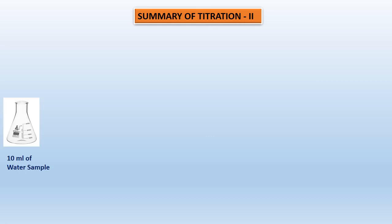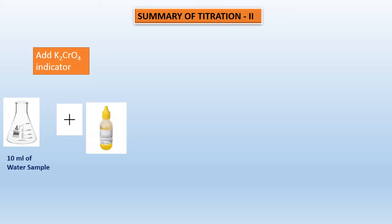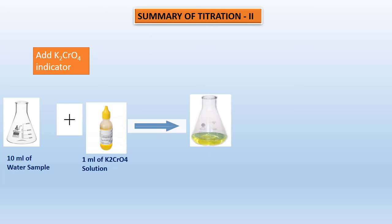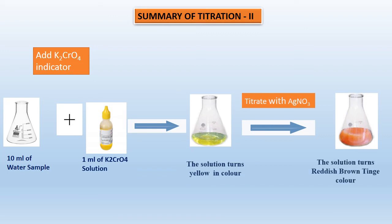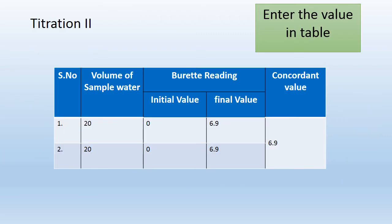Let us summarize Titration 2. We took the water sample, added potassium chromate indicator, and upon adding that we got a yellow solution. Then upon titrating with AgNO₃, we got a reddish brown color.